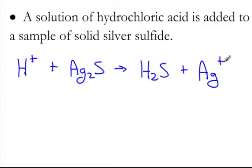We do have to balance this reaction. We have two silvers at the beginning, which means we need two silvers at the end. And we have two hydrogens at the end, which means we need two hydrogens at the beginning. And of course, our charges are balanced out, and this is our production of hydrogen sulfide gas through an acid-base reaction.